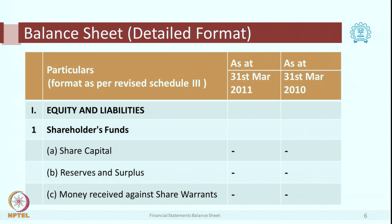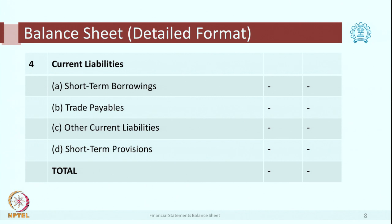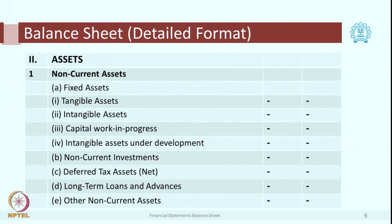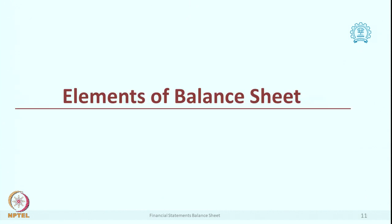In the balance sheet, share capital has the longest renewal, so that comes first, then non-current liabilities, then current liabilities. In assets, first we have got non-current assets because they are going to be with us for more than one year. Within that, fixed assets are likely to be more with the company for a longer tenure. So first we have fixed assets, then other non-current assets, then current assets.